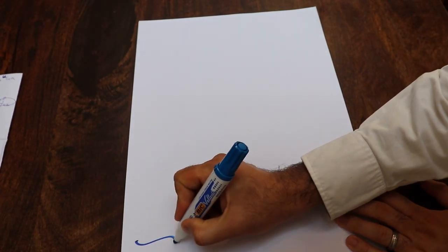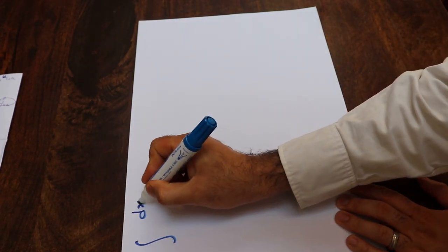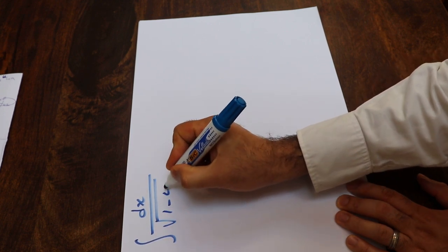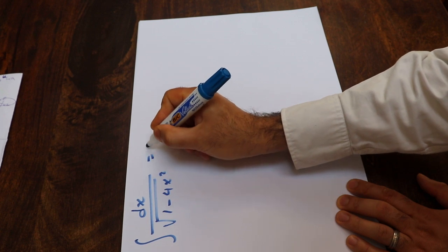Hello everyone, and today I'm going to show you how to calculate the integral of dx divided by square root of 1 minus 4x².